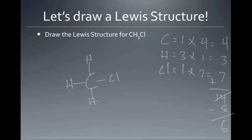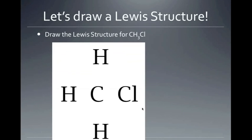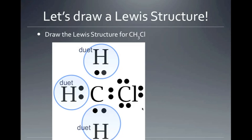We have 6 electrons left. Hydrogen follows the duet rule — it already has 2 electrons from its bond and can't take more. So we place all 6 remaining electrons on chlorine as three lone pairs. Now we verify: each hydrogen is happy with its duet of 2; chlorine has 8 electrons total (6 lone pair electrons plus 2 from the bond); and carbon has 8 electrons from its four bonds. Everyone has either an octet or a duet, so the Lewis structure is complete.